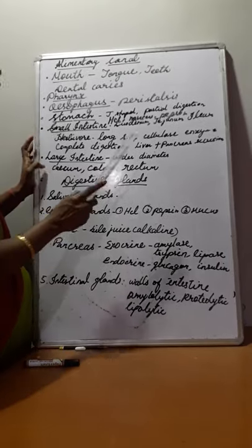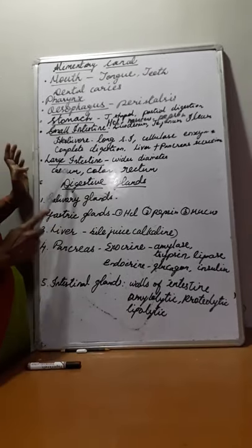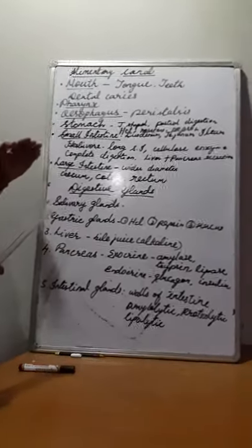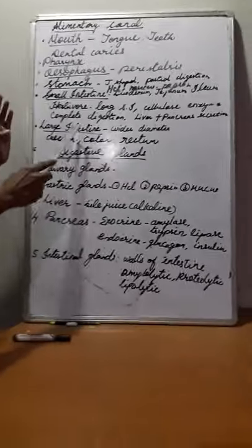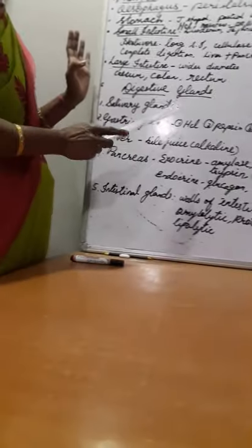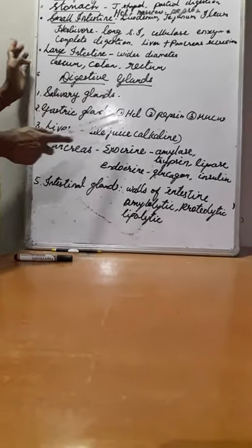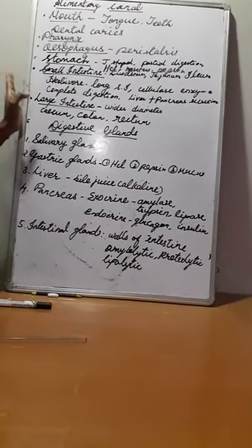The large intestine is wider in diameter. Compared to the small intestine, its length is less, which is why it is called the large intestine — because of its wider diameter. It has three parts: cecum, colon, and rectum. You have learned all the parts of the alimentary canal and their functions.